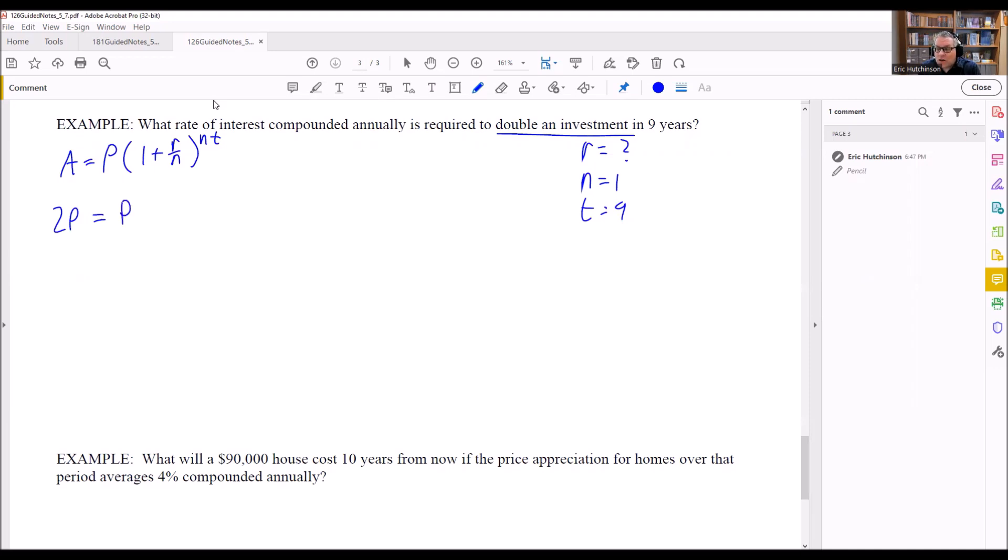Okay, so I have a P here, and I have 1 plus the rate, we don't know what it is, but then the N is 1. We have a 1 here, and then times 9 years. So from this point, we can actually divide both sides by P. So those are going to drop out and we get 2 equals 1 plus R to the 9th power. Okay, so that's how we can simplify the inside.